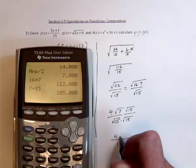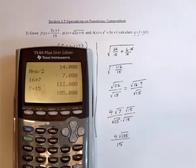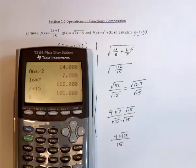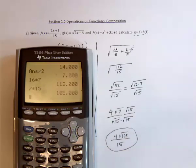So we've got 4 times the square root of 105. The 4 and the 15 cannot be reduced, so it's finally finished.